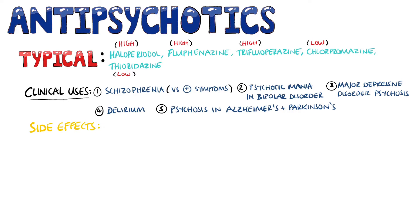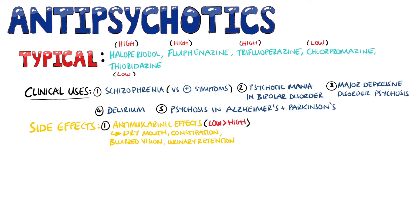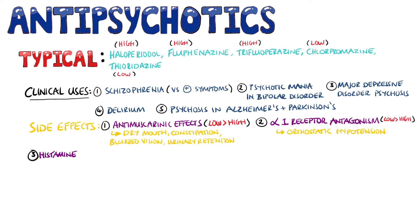For the side effects, we have anti-muscarinic effects like dry mouth, constipation, blurred vision, and urinary retention, which occur more commonly in the lower potency antipsychotics than in the high potency. We also have alpha-1 receptor antagonism, which may lead to orthostatic hypotension, again more common in the low potency than the high potency. And we have histamine H1 receptor antagonism, again more common in the low than high potency, which can lead to weight gain and sedation.